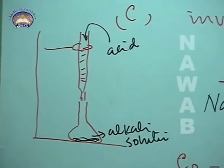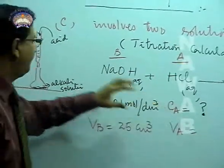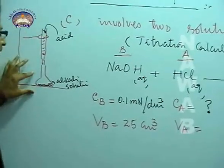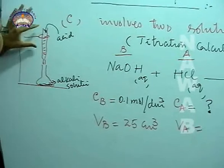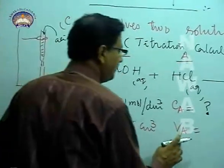We add indicator, and after that we start adding the acid of unknown concentration from the buret to get the end point. When the end point comes, we note the volume. The volume which we note gives us volume of acid.